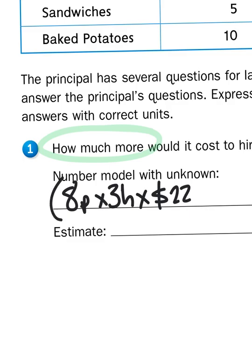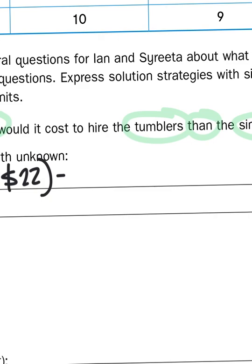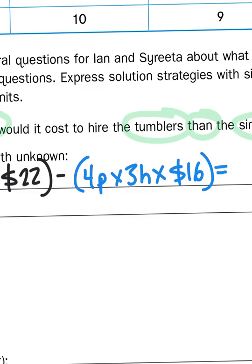And then, what I need to do is I need to subtract the difference of how much it would cost to pay the singers. And there are four singers, four people. They would perform for three hours, and they would each be paid $16 an hour. And that would give me my total, my answer with a known, we'll say E for entertainment.